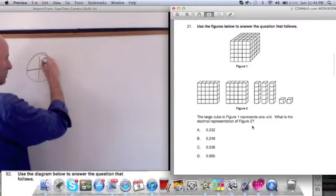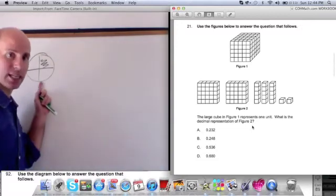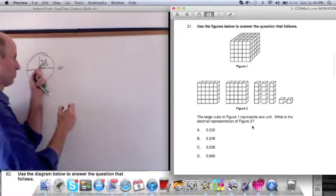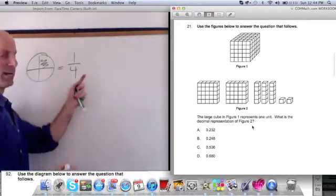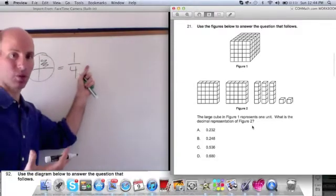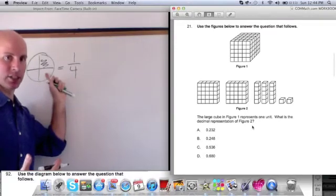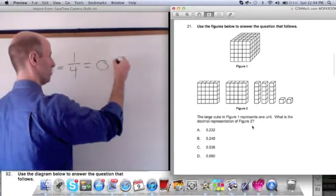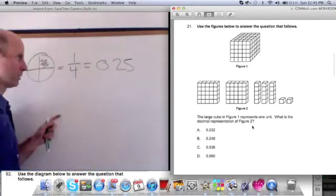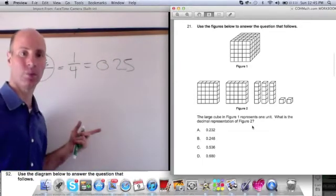For example, if we were looking at this right here, we could write this as a fraction. What portion of this is shaded? 1 over 4. And if I asked you, what is the decimal representation of the shaded figure? You could be 0.25. And that's exactly what we're going to do now.